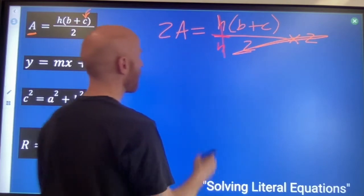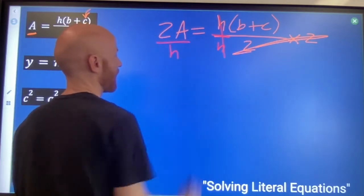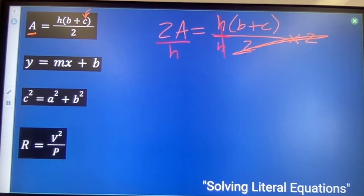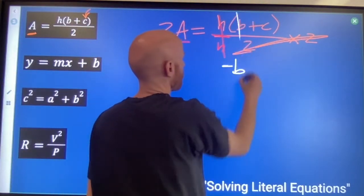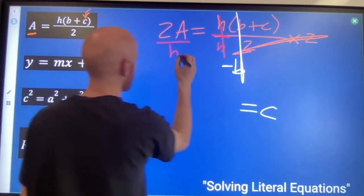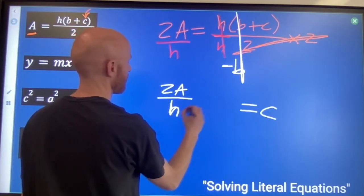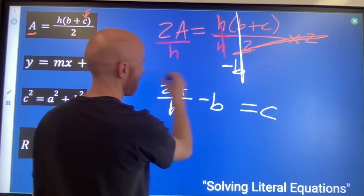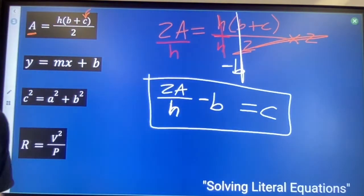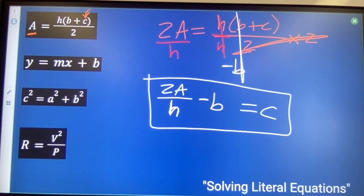And then after that I will divide by H. H over H is 1. Divide by H over here. Now I just have B plus the C, and if I subtract the B, we've got C equals 2A over H minus B. That would be a solution. That equation solved for C.